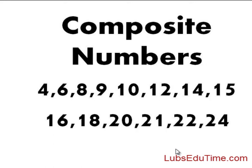A composite number is a number with more than two factors. For example, the factors of 10 are: one, two, five, and ten — so you have four factors, not just two factors like the prime numbers. So a composite number is a number with more than two factors.